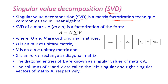Matrix factorization means the very big matrix will be divided into three different smaller matrices, which are used in linear algebra. Here, we have matrix A of size M by N, which is factorized into the form U, Sigma, V transpose. The size of U is M by R, the size of Sigma is R by R, and the size of V transpose is R by N.